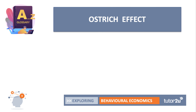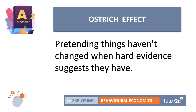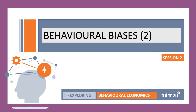The ostrich effect is sometimes called the normalcy bias, and it's pretending things haven't changed when the hard evidence suggests that they have. We've seen examples of that in the recent coronavirus pandemic. There's a video linked on the website illustrating the ostrich effect quite nicely — a group of students going to Florida beaches in the spring of 2020, not really fearful of coronavirus, but fearful of losing their holiday as the evidence mounted about the risks involved.